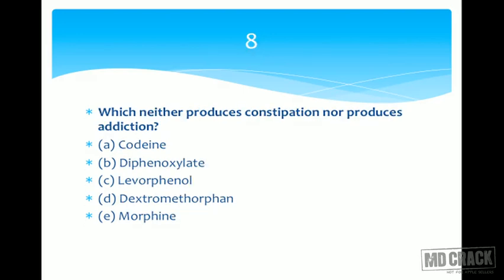Question number eight: which of the following drugs neither produces constipation nor produces addiction? Options are A codeine, B diphenoxylate, C levorphanol, D dextromethorphan, and E morphine. We are in the narcotic analgesics. Morphine, the prototype, produces pinpoint pupils and constipation on long-term use, and addiction — these are characteristic features of narcotic analgesics.